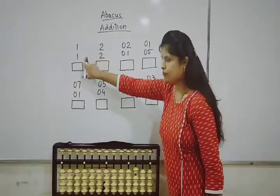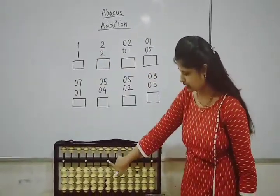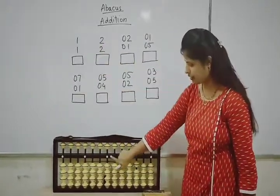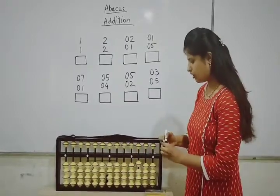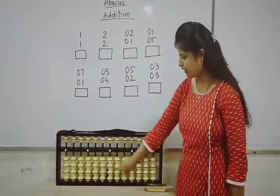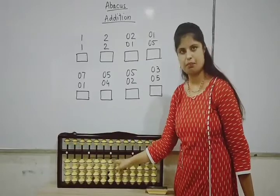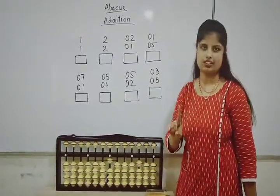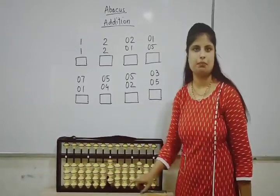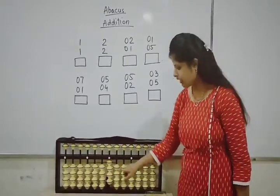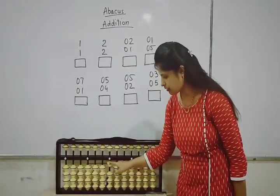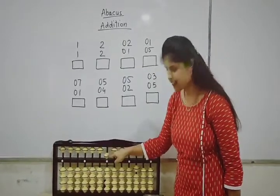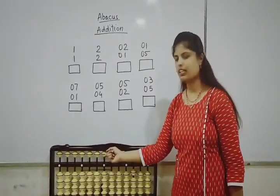For single digit numbers, we have to refer this dot. We have seen this in the first video: if it is a single digit number, we have to refer this middle dot. The rule is: if we have lower bits up, that means addition. Lower bits and upper bits together means minus. Upper bits means addition.